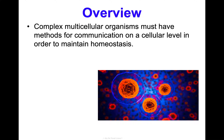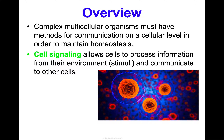So why does this matter? In complex multicellular organisms specifically, they must have methods for communication on a cellular level in order to maintain homeostasis. Think about humans — we're said to have trillions of cells that make us up. If those cells can't work together for common functions, then there's going to be a massive breakdown. So communication and signaling is key.